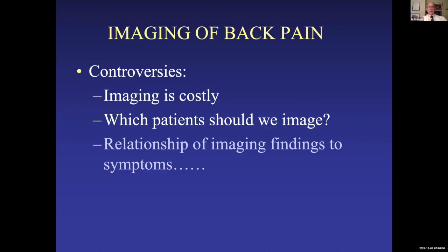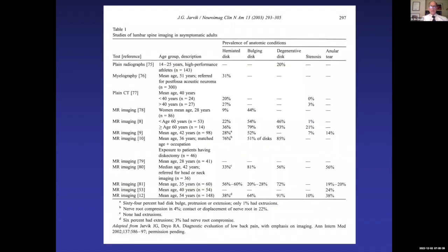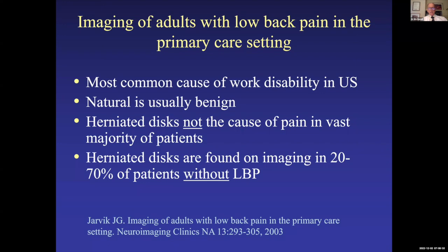Imaging is costly, so who should we image? Jerry Jarvik, who practices in the Seattle, Washington area, has done a lot of work on figuring out who we should and shouldn't image with back pain. Studies using plain films, myelograms, MRIs, and CT scans of asymptomatic adults show a significant incidence of herniated discs, bulging discs, and degenerated discs in people with no back pain. That tells you that seeing changes on an imaging study doesn't mean the patient is symptomatic.